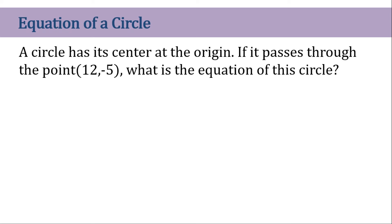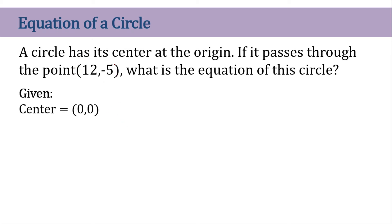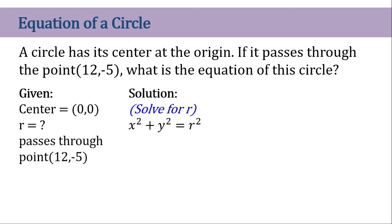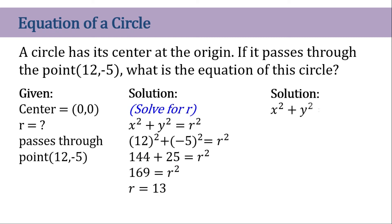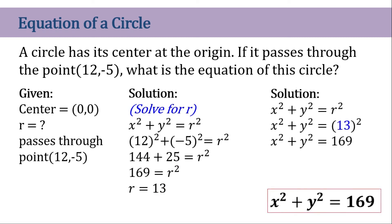Same kind of problem but with a different point. I hope you practice yourself with these three examples. The givens are the center at origin and it passes through (12, -5). Let's solve for r — substitute 12 for x and -5 for y. That gives us r² = 144 + 25 = 169, and our radius is 13. We get the square root of 169 to get the radius, which is 13. Now we substitute r into the formula to get the circle equation.